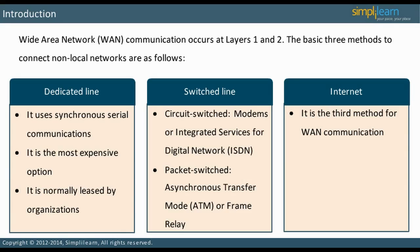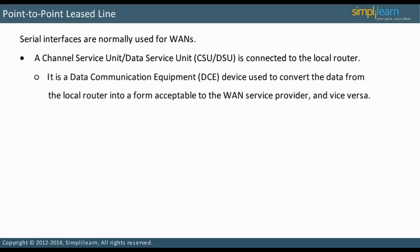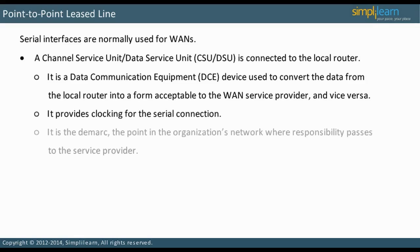Let us look at a point-to-point leased line and how it works. A channel service unit, data service unit — CSU-DSU — is connected to the local router serial interface. This is a data communication equipment device used to convert the data from the local router into a form acceptable to the WAN service provider and vice versa. It provides clocking for the serial connection.